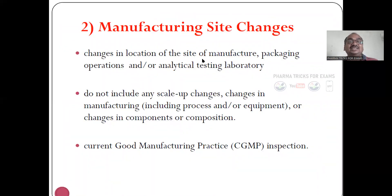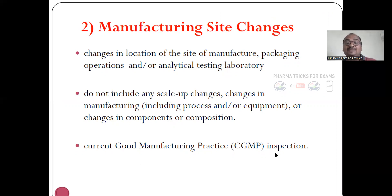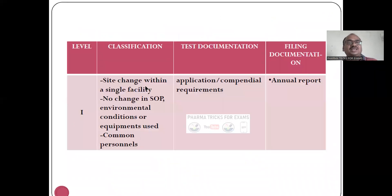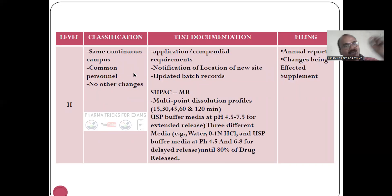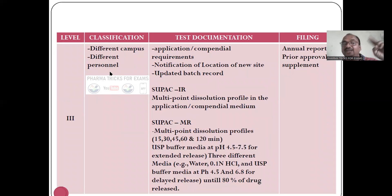Manufacturing site changes cover changes in the location of the site of manufacture — packing operations, analytical testing laboratory — but do not include scale up, which is a separate category. Current Good Manufacturing Practice inspection is required. Level one site change is within a single facility with no change in SOP, environmental conditions, or equipment. Level two is a change to the same continuous campus with common personnel and no other changes — you have to submit an annual report. Level three is a different campus with different personnel — manpower also changing — with more extensive test documentation required.